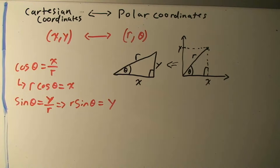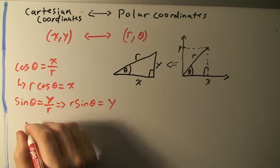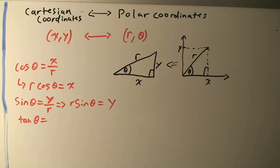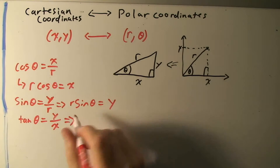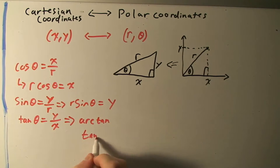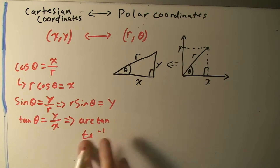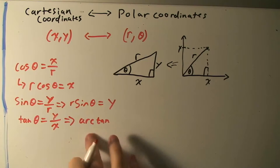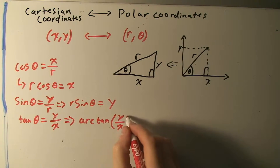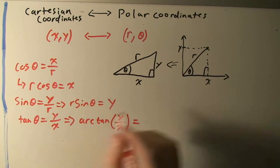If we want to solve for the angle theta, we use the tangent of this angle: tangent of theta is equal to the opposite side over the adjacent side, which is y over x. We can then solve for theta using the inverse tangent, or arctangent. So theta equals arctan(y/x).